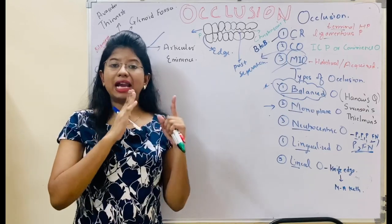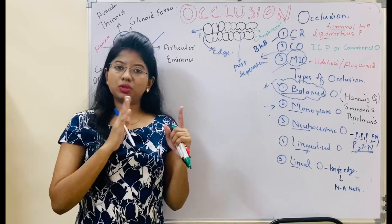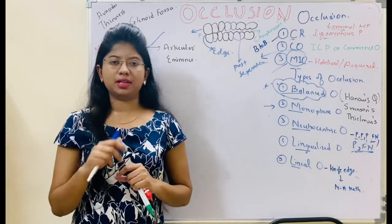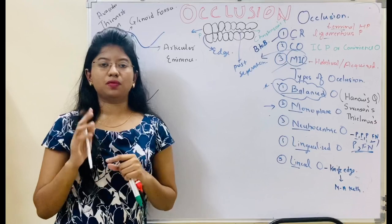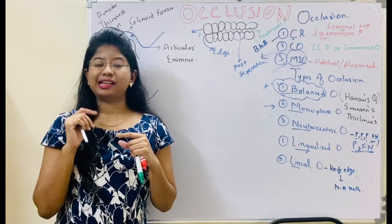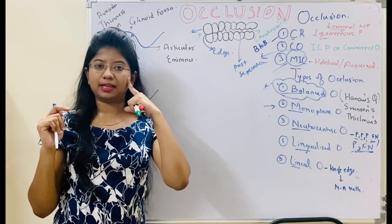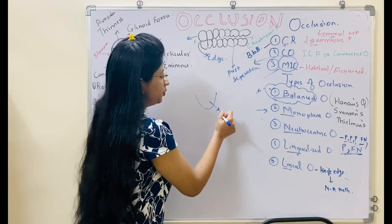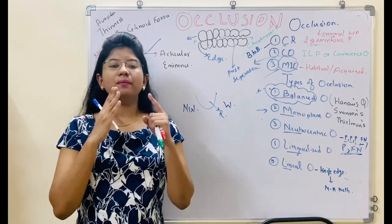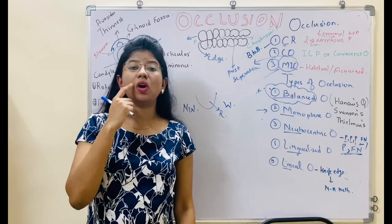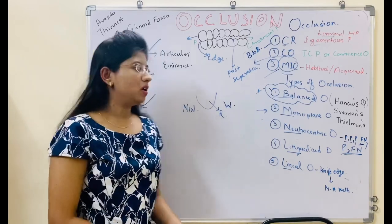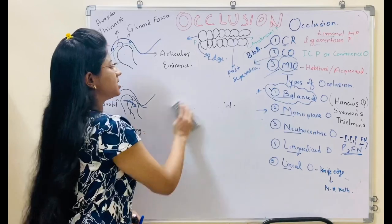When we move to the lateral or right side, we get separation by canine-guided occlusion. When I move the mandible to the working side — for example to the right side — the right side is my working side and the left side is my balancing or non-working side. In this, there will only be contact with the right side canines, and the rest will not be in contact.